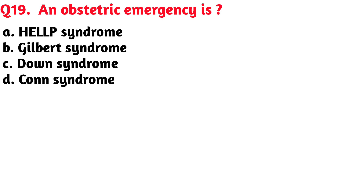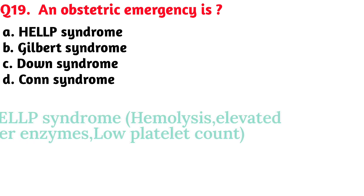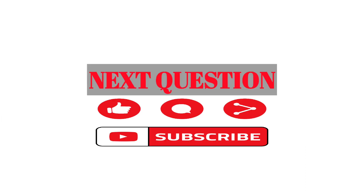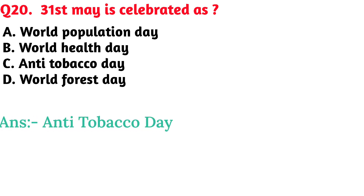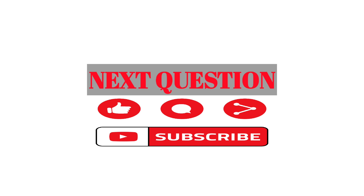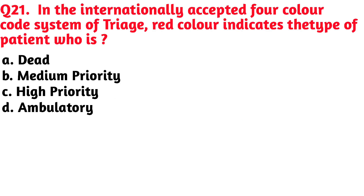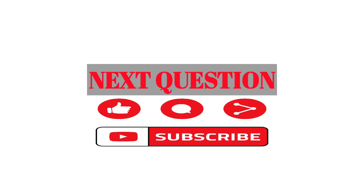An obstetric emergency is — Option A, HELLP syndrome, is the correct answer. 31st May is celebrated as — Option C, Anti-Tobacco Day, is the correct answer. In the internationally accepted four-color code system of triage, red color indicates the type of patient who is — Option C, high priority, is the correct answer.